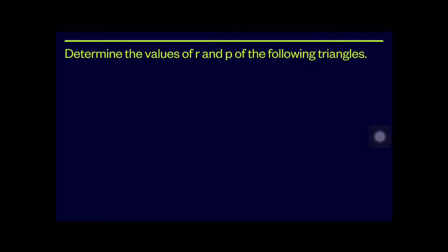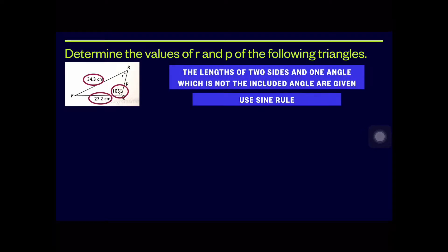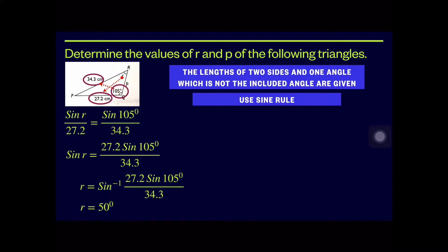There is another example: determine the values of r and p of the following triangle. From the given diagram, two side lengths and one non-included angle are given, so we use the sine rule. First we find angle R: sin R/27.2 = sin 105°/34.3. Therefore, angle R = 50°.